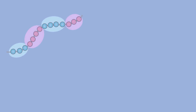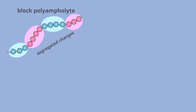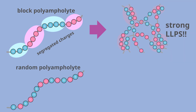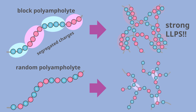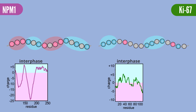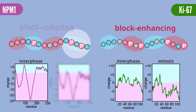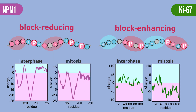Previous studies in polymer science have demonstrated that a polymer chain with segregated charges exhibits stronger LLPS than a chain with the same number of charged residues but randomly distributed. So, we speculated that the addition of multiple phosphate groups may enhance the charge blocks in the case of Ki67, and reduce them in the case of NPM1, which results in the opposite effect on LLPS.